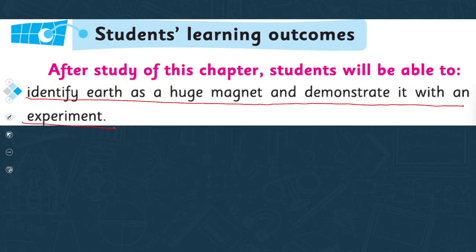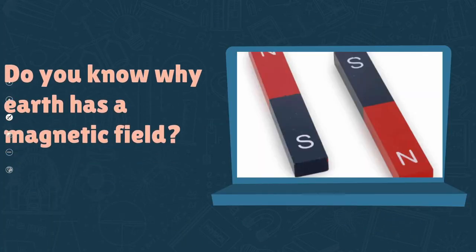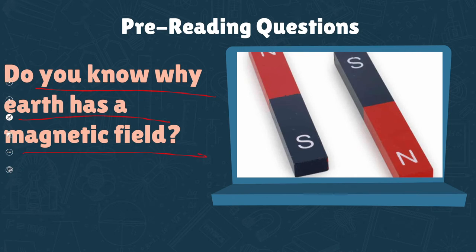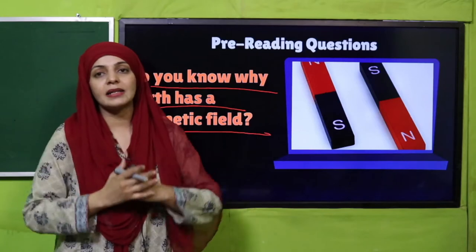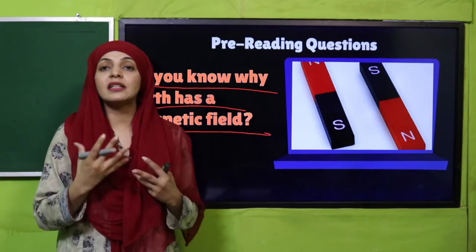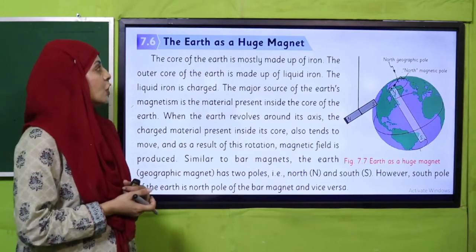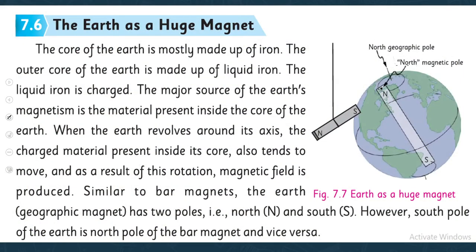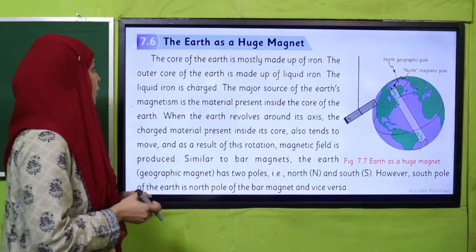Do you know why the Earth has a magnetic field? Why is the Earth a huge magnet? Do any of you know? Don't worry, I'll tell you why the Earth has a magnetic field. Let's quickly open the reading page. Open 'The Earth as a Huge Magnet' in your Science Grade 5 book, Chapter Number Seven, Page Number 98. I hope everybody has opened the books. Now let's start the reading.